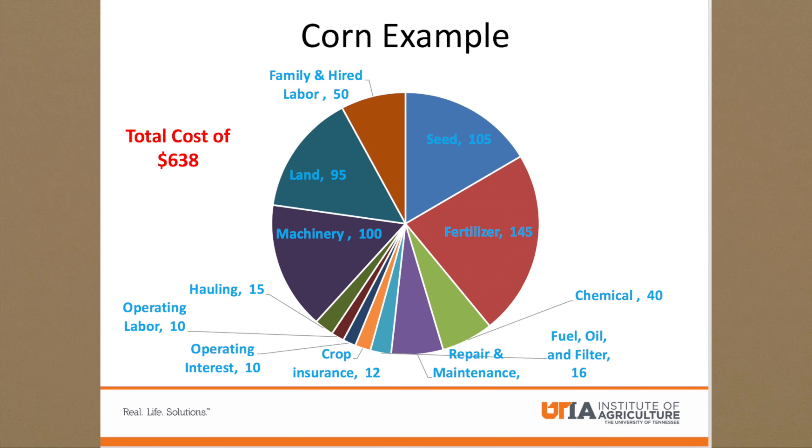To address the three questions I mentioned — how do I use my cost of production mid-season in making a management decision, how do I use it for making future management decisions, and how do I use it for making wise marketing decisions — we're going to look at two examples, or case studies. The first one will be a corn case study. You may see a slide pop up here that's got a pie chart that breaks down cost of production for corn.